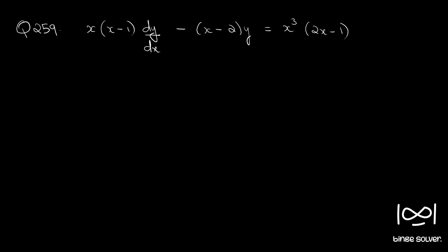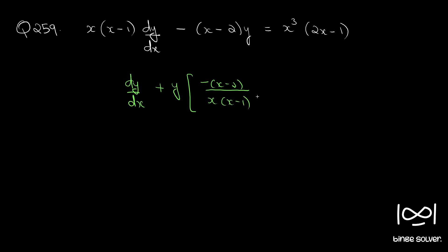Question number 259. x(x minus 1) dy/dx minus (x minus 2)y equals x cubed times (2x minus 1). So if you divide throughout by x(x minus 1), we have dy/dx plus y times [minus(x minus 2) / (x(x minus 1))] equals x cubed times (2x minus 1) divided by x(x minus 1).